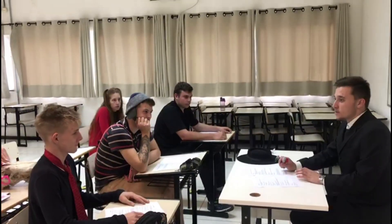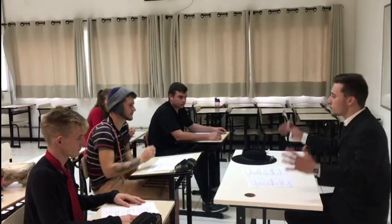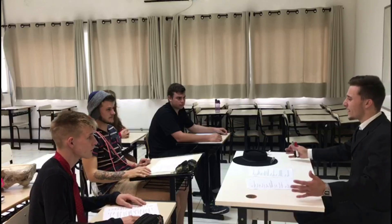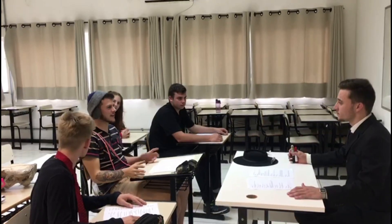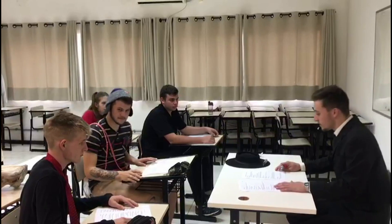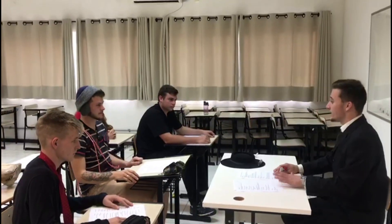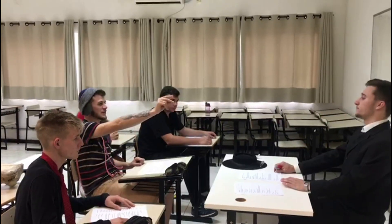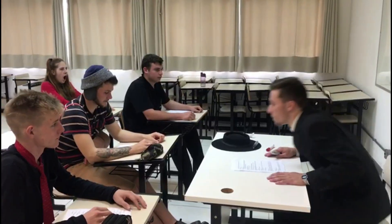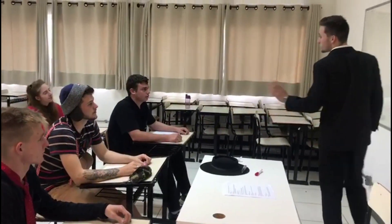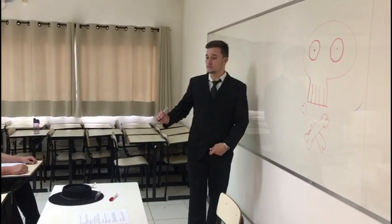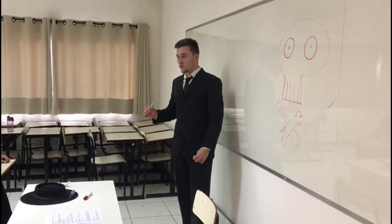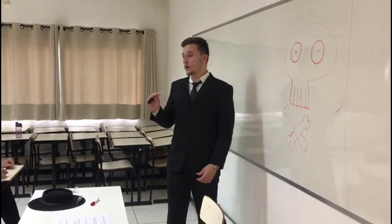Será que ninguém lembra das últimas aulas de genética? Eu lembro um pouquinho daquela parte de martelos — aqueles martelos que eram gigantes. Não eram martelos, mas sim alelos. E não eram gigantes, eram dominantes. Turma, alelos são formas variáveis de um mesmo gene. Um gene recessivo se expressa somente em dose dupla, enquanto um gene dominante se expressa tanto em dose dupla quanto simples.